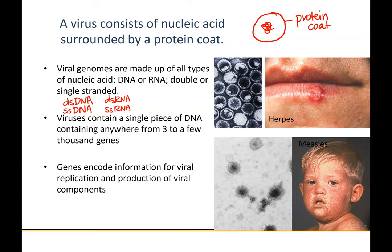The genes encoded in the virus carry information for replication of the genome and for producing the components of that virus — the protein coat and any other pieces of its physical structure. These genes do not encode the ability of the virus to replicate itself independently; it encodes the genes for replication but doesn't have the machinery to actually replicate its genome without a host cell. So when a virus infects a host cell, it takes over the molecular machinery and uses it to reproduce its own genetic material and the components to make that virus.